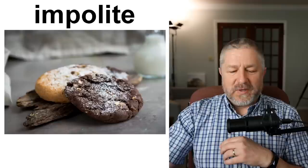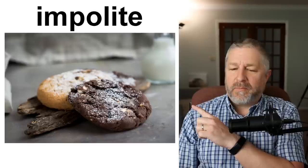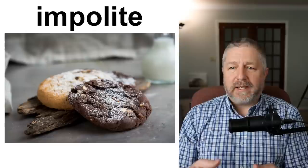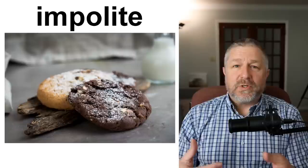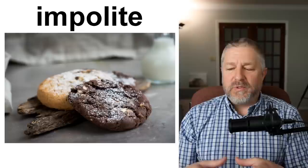Impolite — when you are impolite, it's the opposite of being polite. It's when you don't say thank you when someone gives you something, or when you always take the biggest cookie. If someone offers you a cookie and you always take the biggest one, that's impolite. We are always trying to teach our children to be polite — to say please and thank you, to share with each other, to not always take the biggest cookie. When someone gives you something and you don't say thank you, you are being impolite.